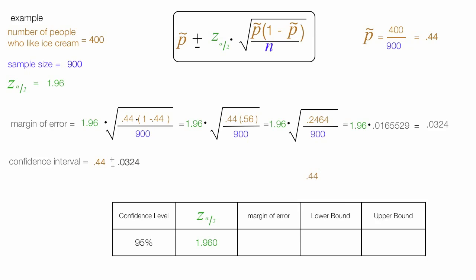So the lower bound is 0.44, minus the margin of error, 0.0324, which is equal to 0.4076. That's the lower bound. The upper bound is 0.44, plus 0.0324, or 0.4724 is the upper bound.